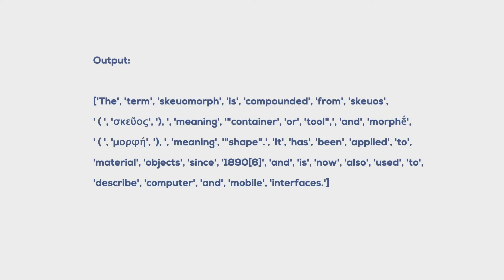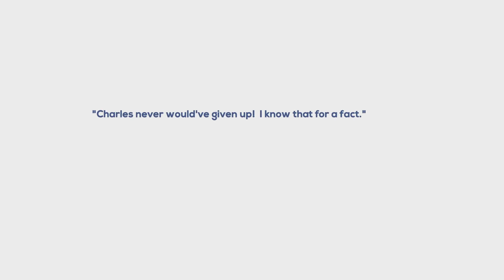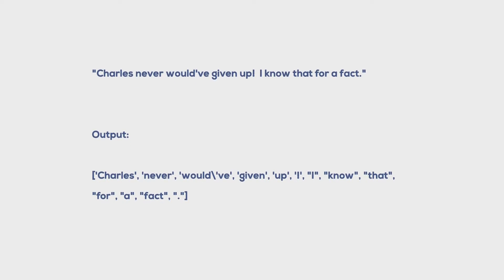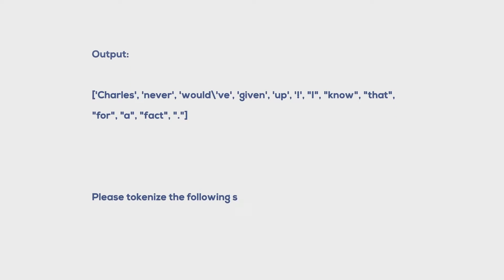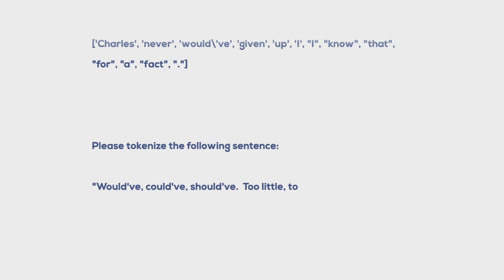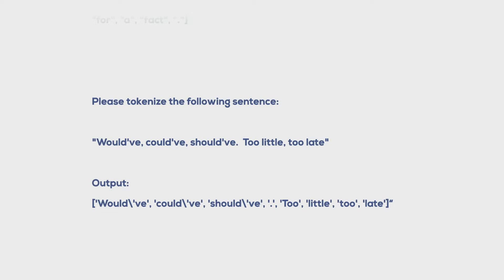In my final test, I wondered if I could get it to escape strings. This time I gave it two examples instead of one. The example I gave included single quotes in it, and I also included what it would look like if properly escaped. I gave it the sentence 'Charles never would've given up. I know that for a fact.' and manually escaped the strings for 'would've'. Then I gave GPT-3 the sentence 'would've, could've, should've. Too little, too late.' — three instances where GPT-3 would need to escape single quote strings. I was shocked — just with two examples, or two shots, we were able to get a decent proof of concept for working tokenization through GPT-3.